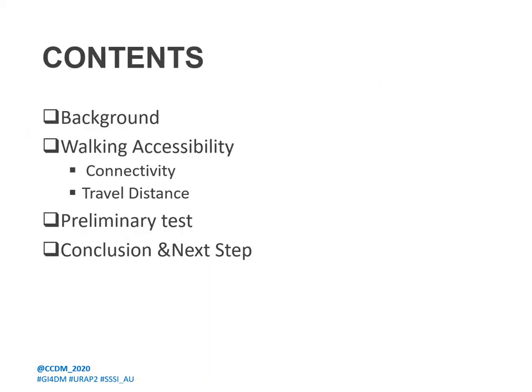My presentation will include four sections. The first section is the research background. Following that, I will introduce walking accessibility and two criteria within walking accessibility evaluation: connectivity and travel distance. The third section is a preliminary test. Then following that is the conclusion and my following step work.